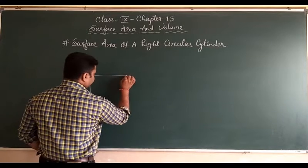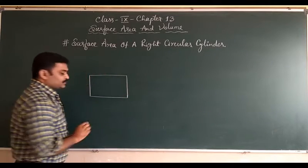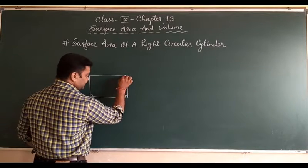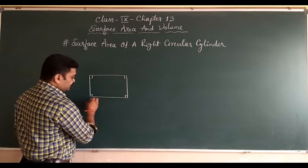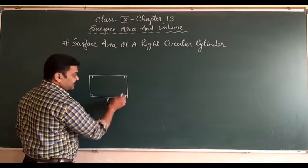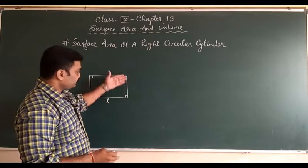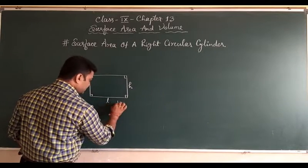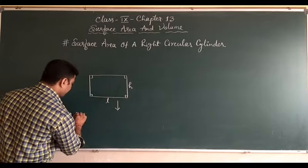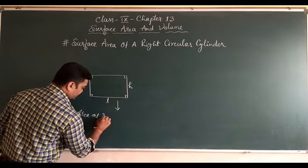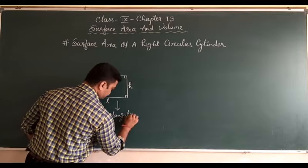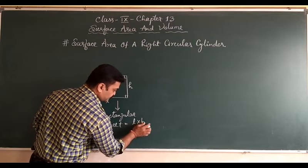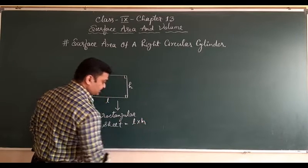Suppose I am taking a piece of paper that is rectangular in shape — that means all angles are right angles. I am taking the length of the rectangle as l and the breadth as h. So the area of this sheet — the area of this rectangular sheet — is equal to length into breadth, that is, length into height.